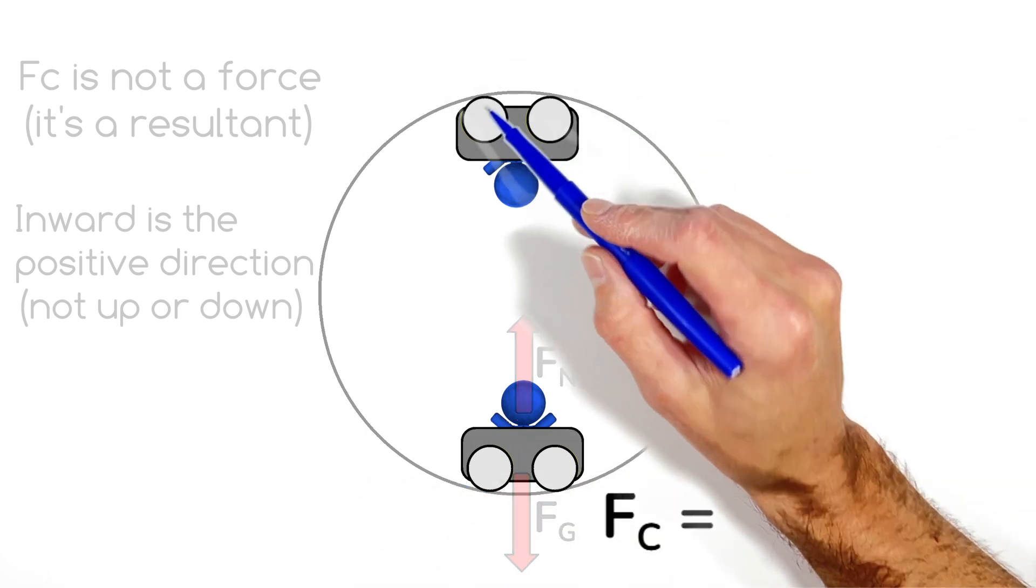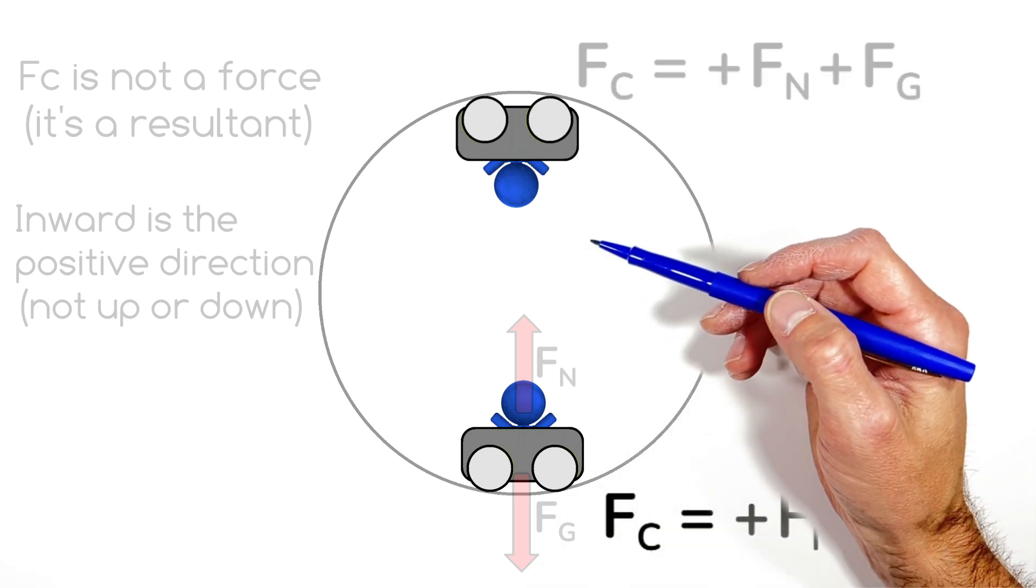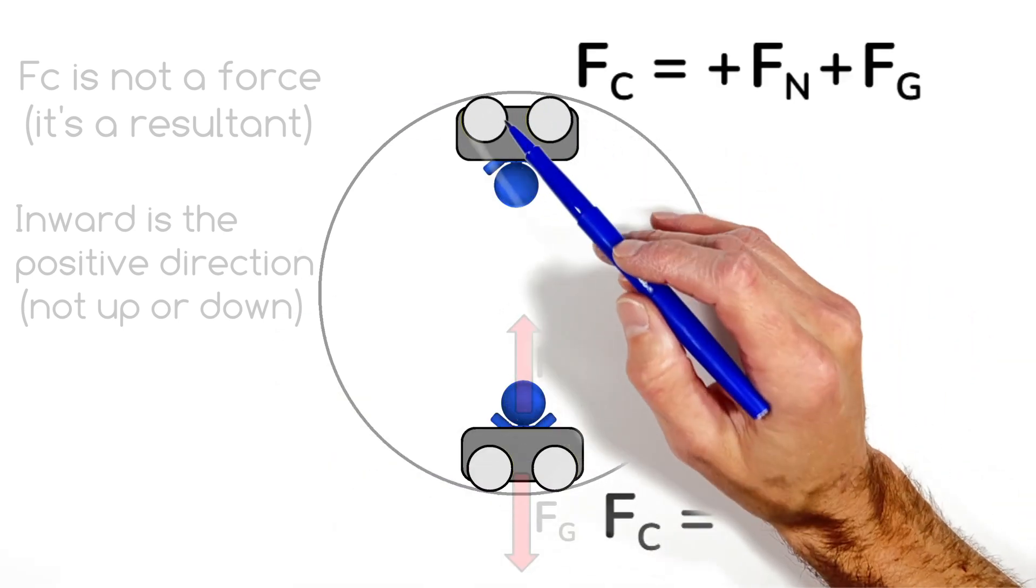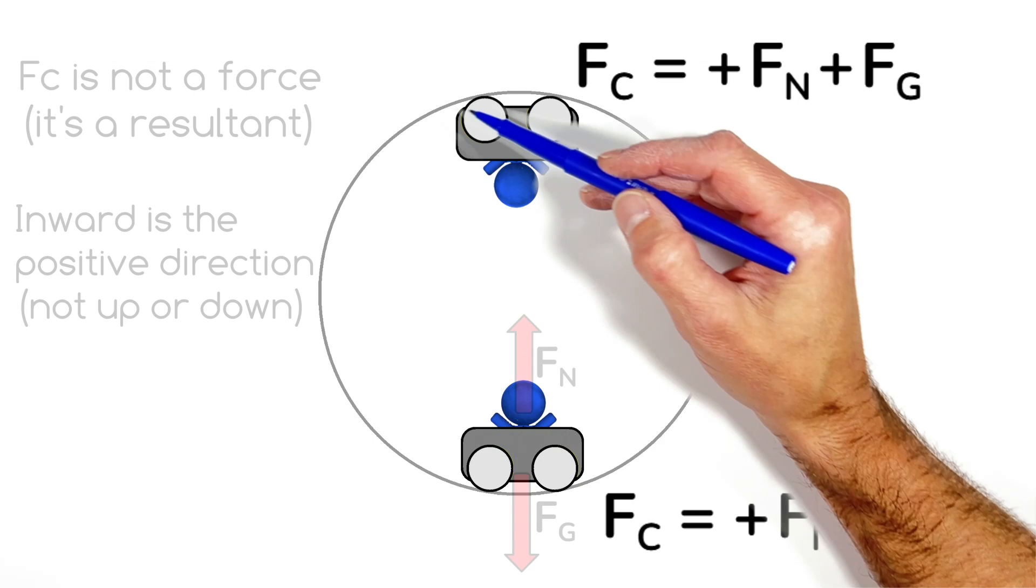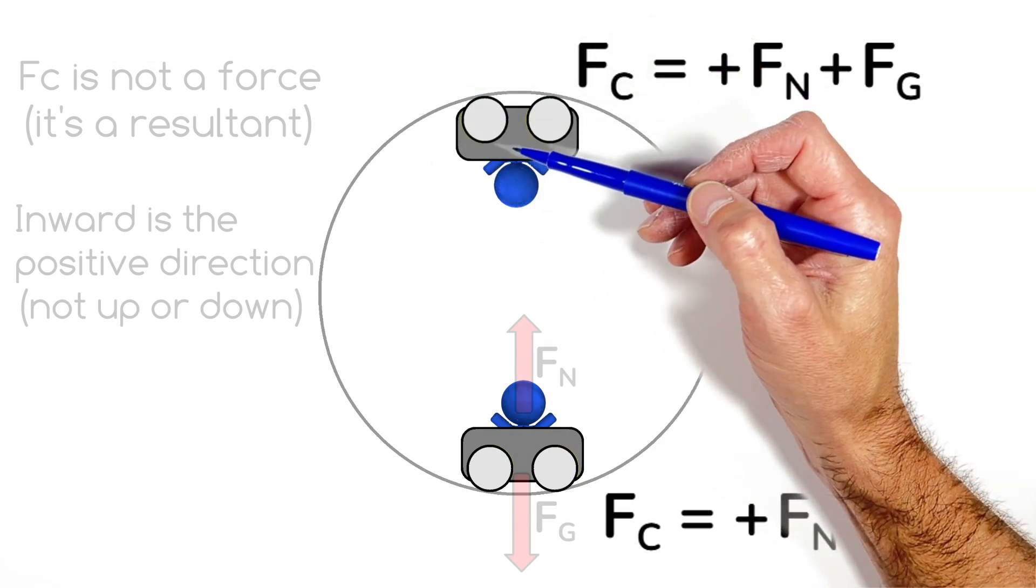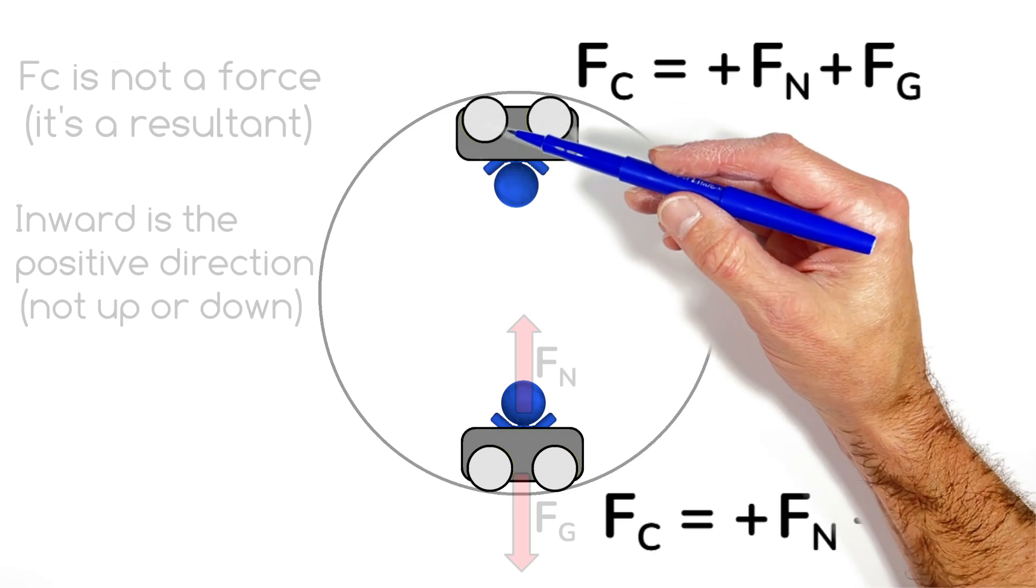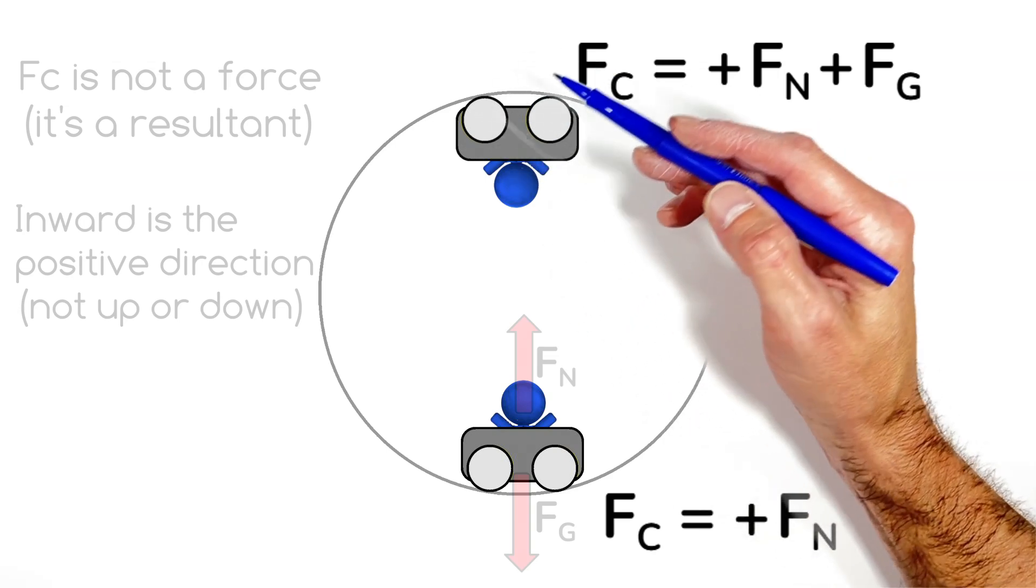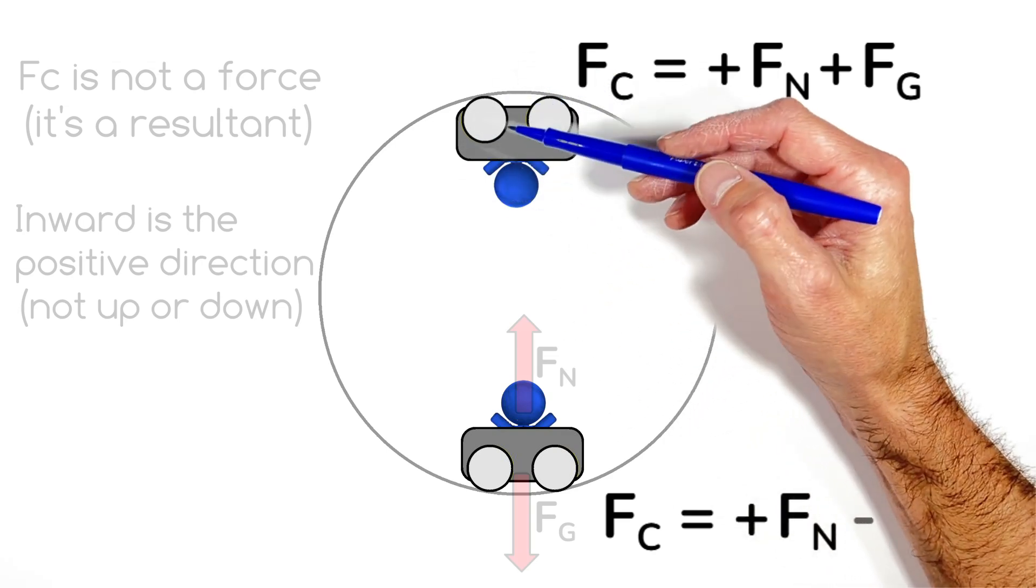Now moving this cart up to the top of the circle, we have a different situation. At the top of the circle, provided the roller coaster cart is going quickly or fast enough for the people to not fall out of the cart, because for some reason in physics roller coaster carts don't have seatbelts, I don't know why.